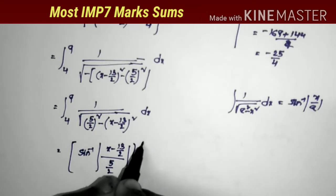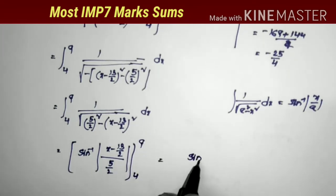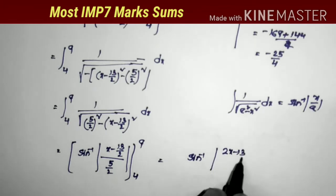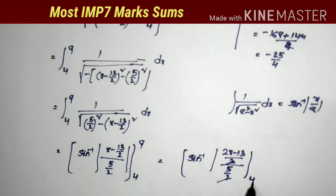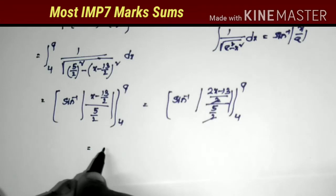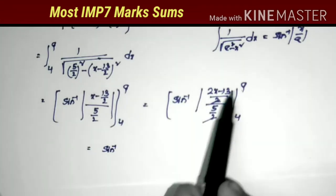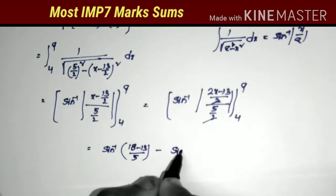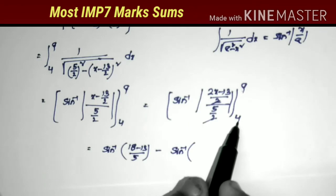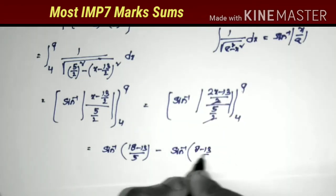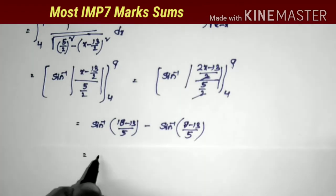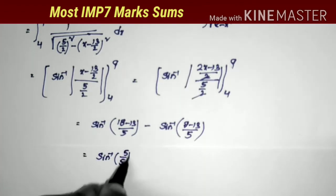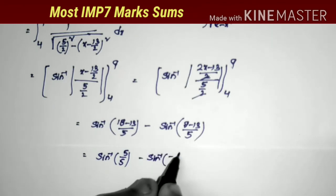Here x corresponds to (x minus 13/2) and a equals 5/2, with limits from 4 to 9. After simplification, the 2s cancel giving sin inverse of (2x minus 13)/5, evaluated from 4 to 9. Substituting x = 9: sin inverse of (18 minus 13)/5 = sin inverse of 5/5. Substituting x = 4: sin inverse of (8 minus 13)/5 = sin inverse of minus 5/5.